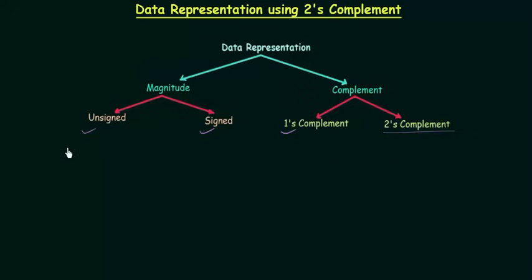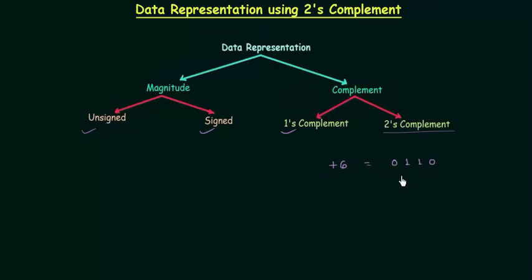For example, if you want to represent plus 6 in two's complement, then simply it is 0, 1, 1, 0. So this is the representation of a positive binary number in two's complement.